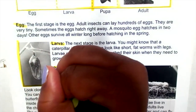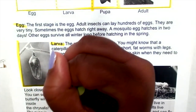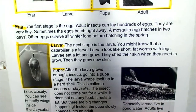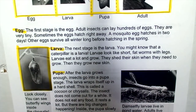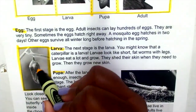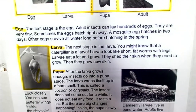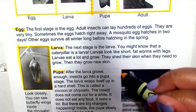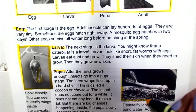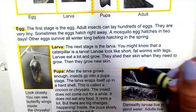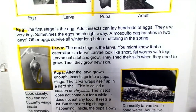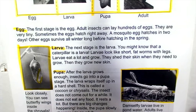Look closely — you can see butterfly wings inside the chrysalis. The pupa is changing to an adult. I see the wings right there. A damselfly larva lives in pond water, while adults live above the water and can fly.